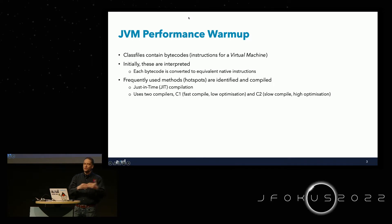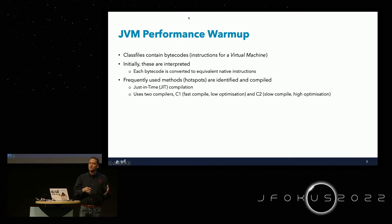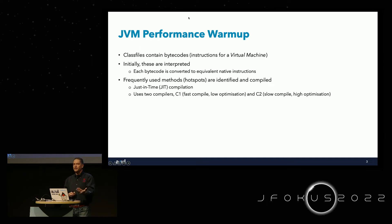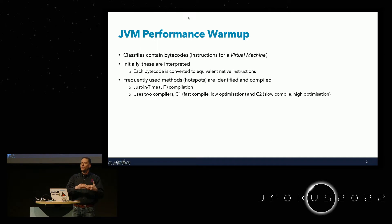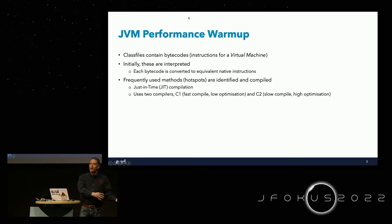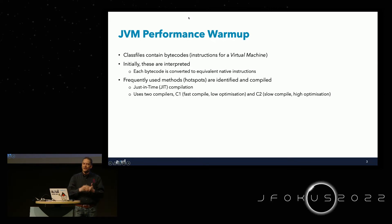When we find a hotspot — a frequently called method — we pass it to the just-in-time compiler, which turns it into native instructions for that platform. HotSpot actually has two JIT compilers: C1 and C2. C1 compiles very quickly so the code can run immediately, though without much optimization. We then profile that method — tracking how it's being used — and when it reaches another call threshold, we pass it to the C2 JIT compiler, which spends much more effort optimizing the code for even better performance.